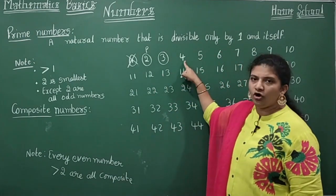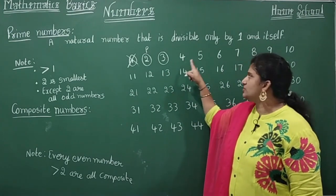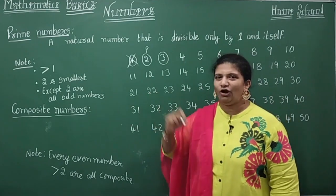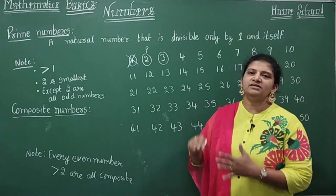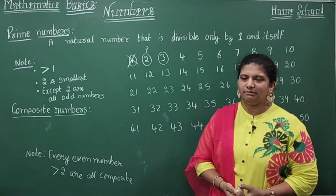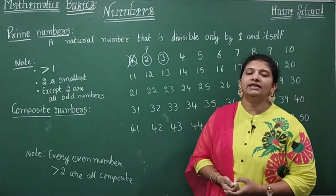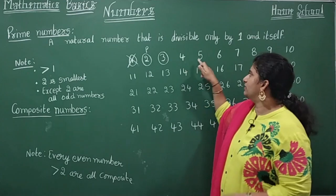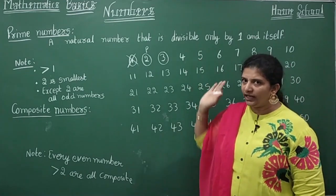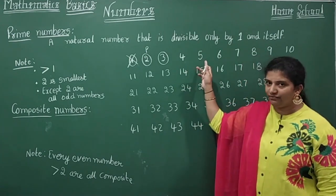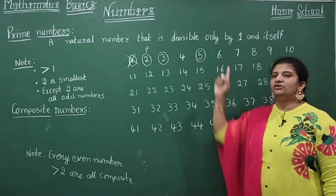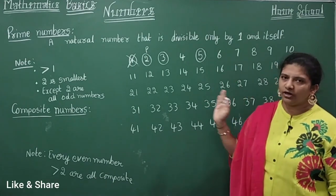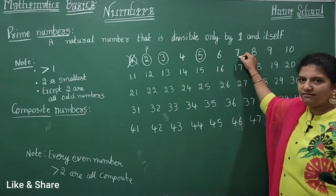Four — yes, it is in the two-times table: two twos are four. So it is not a prime number. Numbers that are not prime are called composite numbers. Composite numbers are numbers other than prime, having more than two factors. Four is not a prime number. Five — you've only seen five in the five-times table: five ones are five — so five is a prime number. Six — two threes are six and three twos are six — so six is not a prime number.